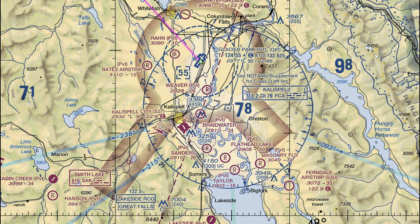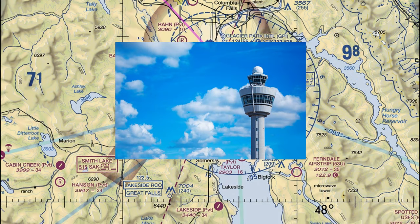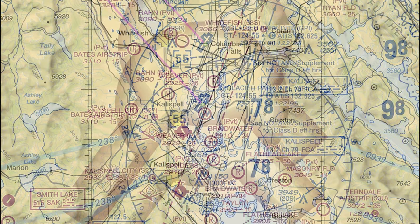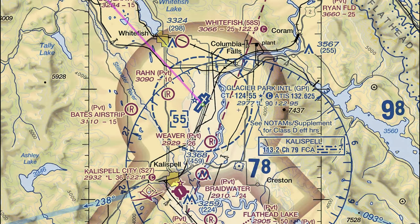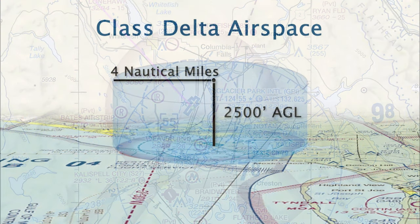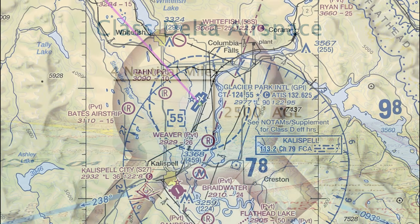Class D airspace exists around most airports with an operational control tower, so most Class D airspaces are controlled airspaces with a tower. Generally, Class D airspace extends from the surface to about 2,500 feet above ground level and exists within about 3 to 10 nautical miles from the airport.